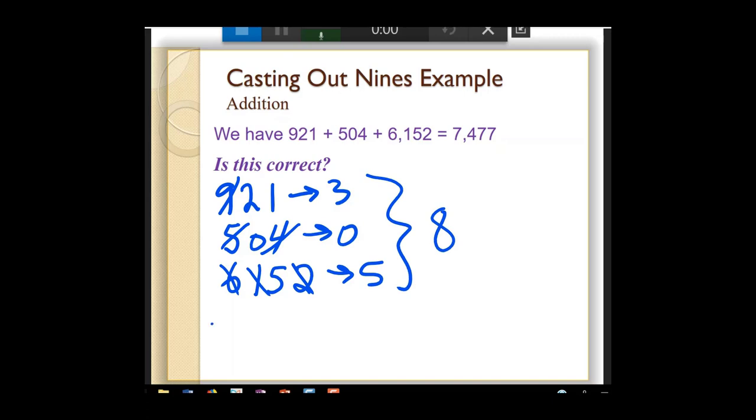And now when I look at my answer of 7, 4, 7, 7, let's see what we've got here. 21 and 4 is 25. And if I cast out 9 and 9, that gives me 7. And now I see that these two answers are not the same. Therefore, there is an error in my calculation, so I need to go back and find out what that error would be.